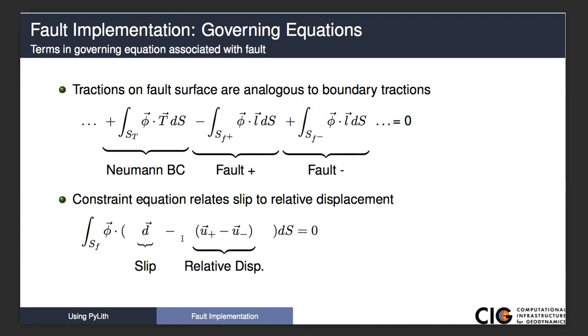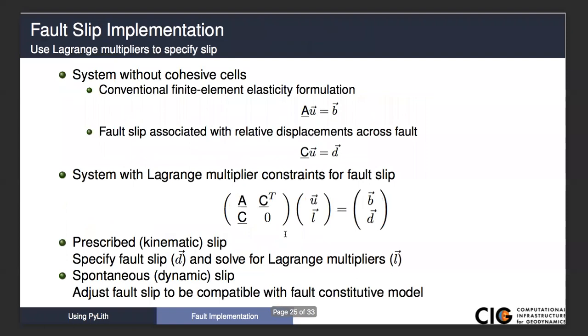On the relative displacements, there are constrained equations—the slip minus relative displacement should be equal to zero. When we add this into our nominal A·U equals B, we end up for the Lagrange multiplier degrees of freedom a zero on the diagonal and these constraint off-diagonal entries. This complicates the solve, but we have developed solver settings that take this into account and provide good optimization.